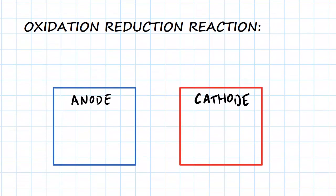So with an oxidation-reduction reaction, we have an anode and a cathode. At the anode, that's where we have the oxidation reaction.